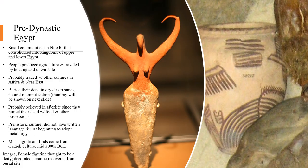Before we continue, I want to discuss pre-dynastic Egypt or prehistoric Egypt — that is, what life was like in Egypt before the development of writing. Archaeologists and historians have to work together here because there are no written records from this period. They generally think that the average Egyptian in the pre-dynastic period lived in a small community or village along the Nile River, and that these communities were eventually consolidated into the kingdoms of Upper and Lower Egypt. Pre-dynastic Egyptians would have practiced agriculture and probably traveled by boat up and down the Nile River. They probably also traded with other cultures in Africa and the Near East.